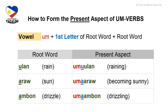Let's now apply the rules on root words that begin with a vowel. Our first example is ulan, meaning rain. The first letter of ulan is 'u', so to form the present aspect it's: um + u + ulan = umuulan, which means 'raining.' It's very easy, right?